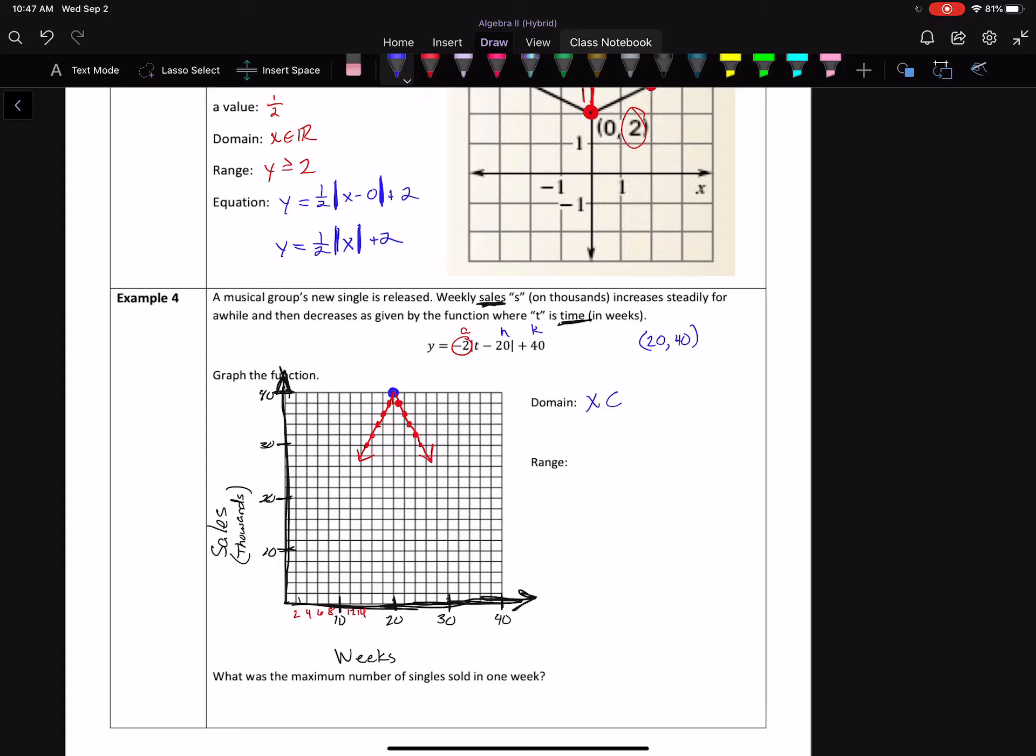Now, the domain, we can always plug in any real number, always. The range, the y values, are going to be what compared to 40, my k value. If you look at the graph, you can see that they're going to be below, so less than or equal to. So the question is now, what is the maximum number of singles sold? Anytime I ask you maximum or minimum, it always comes from your vertex. So what is the maximum number of singles sold? It looks like we are up there at 40,000. And there you go. Just a quick recap on graphing and then answering a question based off of it.